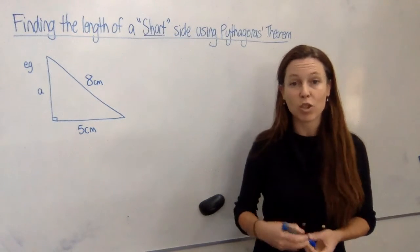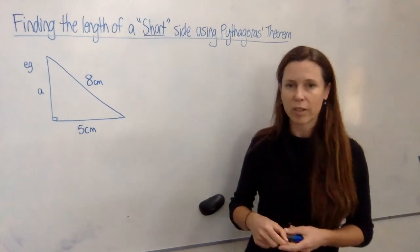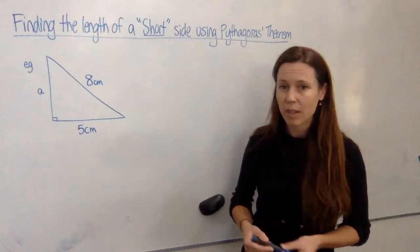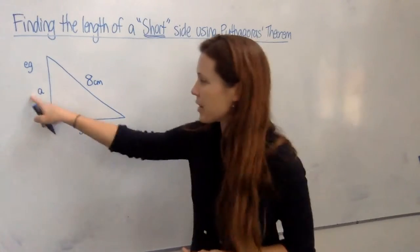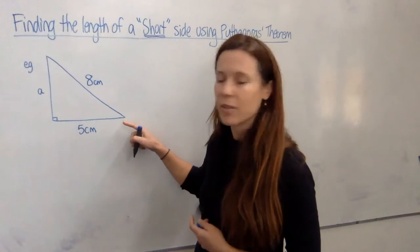Let's have a look at how we find the length of a short side on a right-angled triangle using Pythagoras' theorem. Now I say a short side because what we're trying to find here is one of these two sides, not the long side, the hypotenuse.